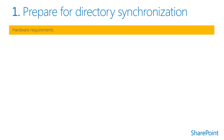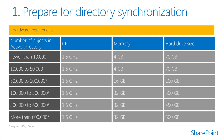The performance of the directory synchronization tool depends on the size and complexity of your Active Directory and the hardware running the tool. Insufficient hardware will increase latency or cause failure to propagate on-premises data to the cloud. The tool consumes hard disk space that increases based on the size and complexity of your Active Directory infrastructure, and the disk capacities listed are estimates of total disk space required to synchronize Active Directory for stated sizes.